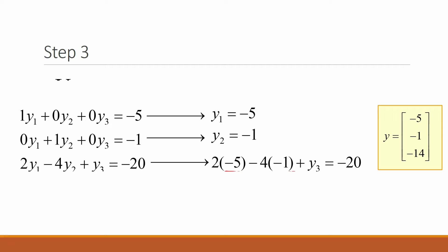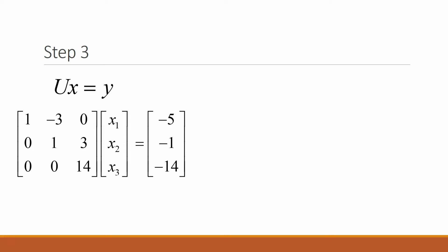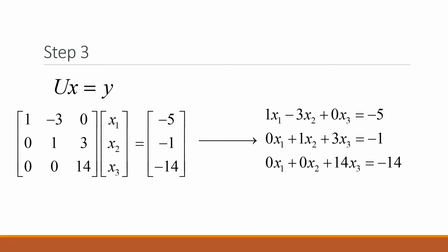Step three: let U times X equal Y and solve for X. U is our upper triangular matrix, and Y is the matrix determined in step two. The goal of step three is to solve for X, which can be done in a similar fashion to step two by converting the matrices into a linear system.